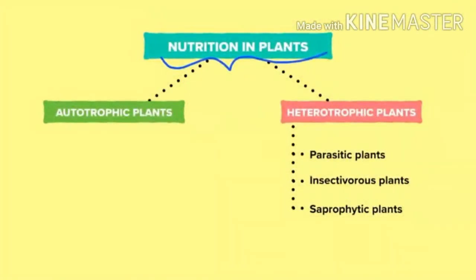Let's summarize. Nutrition in plants is mainly of two types. Plants are of two types: autotrophic plants and heterotrophic plants. Heterotrophic plants are again of three types: parasitic plants, insectivorous plants, and saprophytic plants. Students, I hope you understood the topic. For better understanding, read the topic once again and do the given homework.